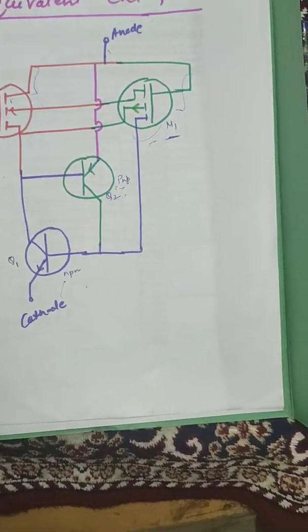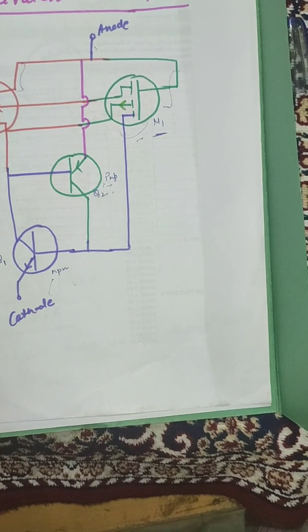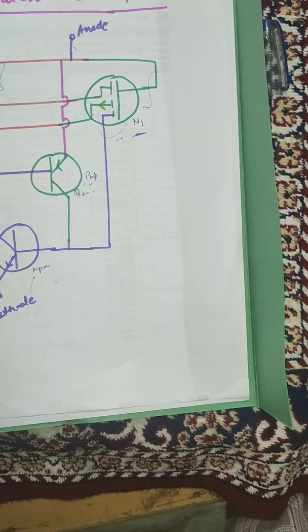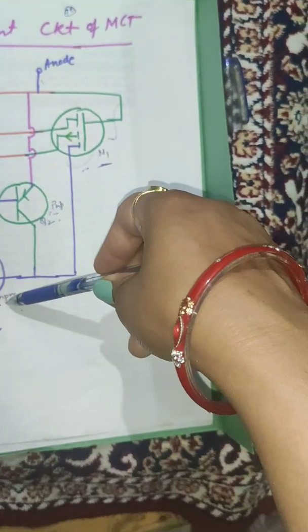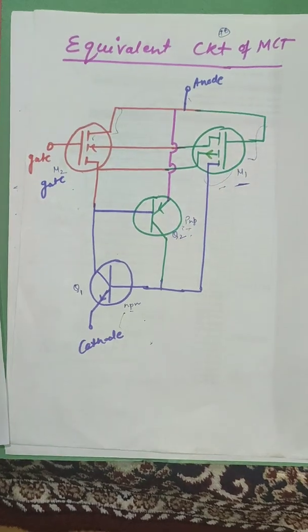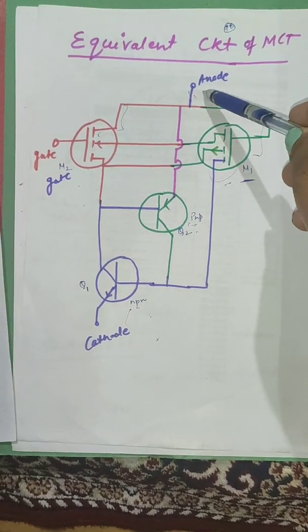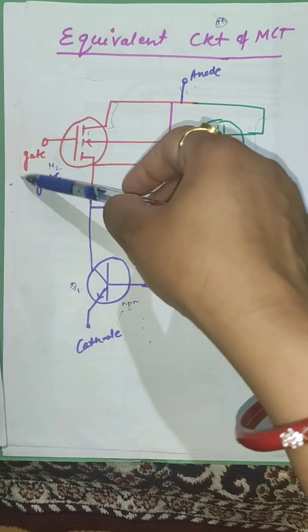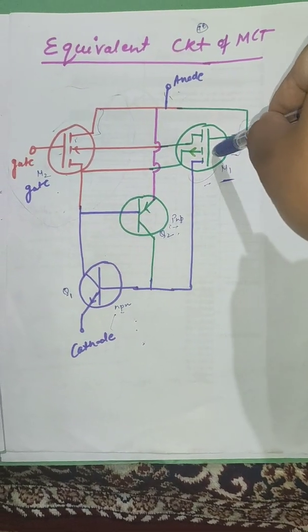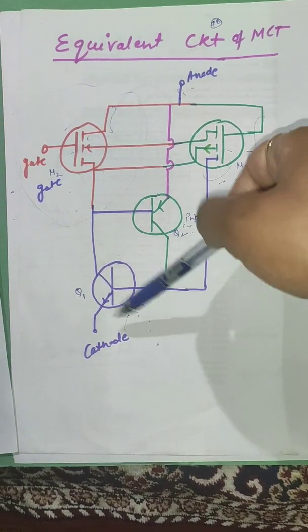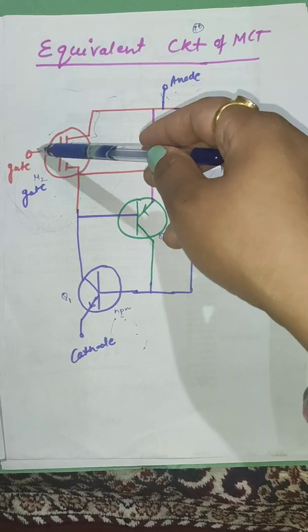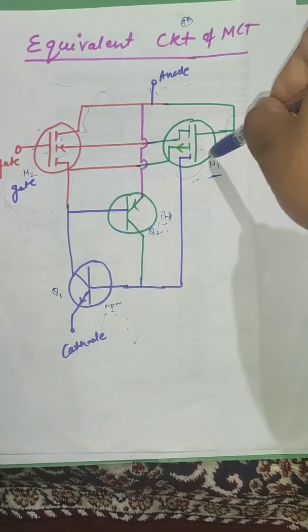When anode is positive with respect to cathode, negative gate pulse should be given to M2. It will trigger M1. It will latch Q1. Current will flow from anode to cathode. If we give positive gate pulse to M2, it will not trigger the M1.